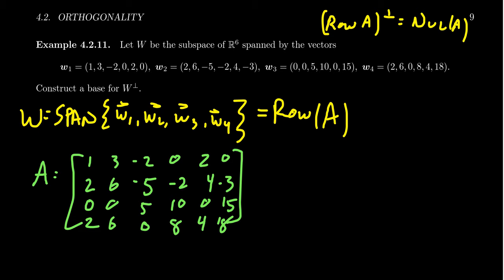To summarize: to find a basis for the orthogonal complement of a subspace W, first find a spanning set for W (a basis is better, but a spanning set suffices). Construct a matrix whose rows are those spanning vectors — for complex vectors, take conjugates first. Then row reduce the matrix and find a basis for its null space. That null space basis is a basis for the orthogonal complement W perp.